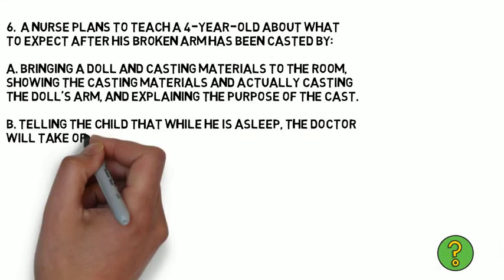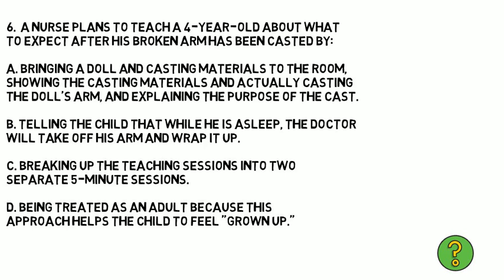Question 6. A nurse plans to teach a four-year-old about what to expect after his broken arm has been casted. A) Bring a doll and casting materials to the room, showing the materials and casting the doll's arm while explaining the purpose of the cast. B) Tell the child that while he is asleep, the doctor will take off his arm and wrap it up. C) Break up the teaching sessions into two separate five-minute sessions. D) Treat him as an adult because this helps the child feel grown up. The correct answer is C. Breaking up the teaching sessions into two separate five-minute sessions — a lot of kids don't have long attention spans, so it's best to have two short sessions so they can better retain the information and pay attention throughout.